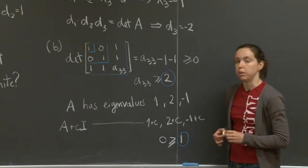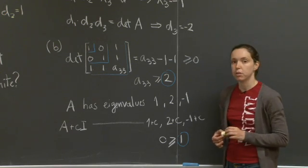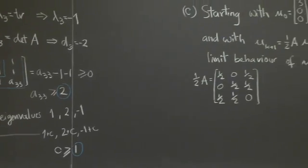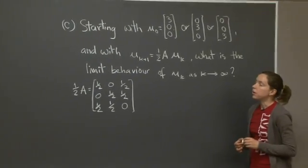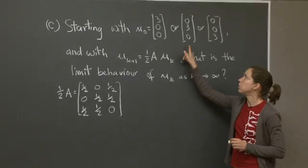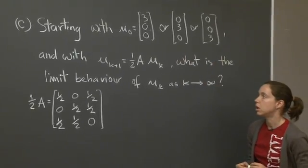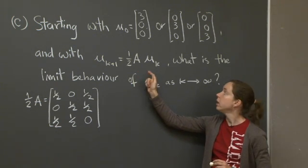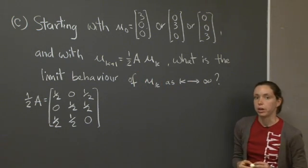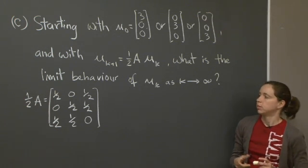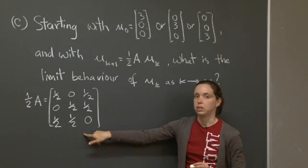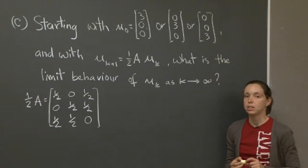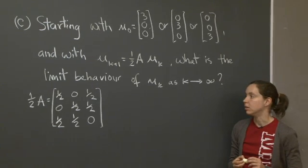That solves parts A and B of this question. There is a part C: starting with one of these three vectors — (3,0,0), (0,3,0), or (0,0,3) — and with u(k+1) equals one-half of A times u(k), what is the limit behavior of u(k) as k goes to infinity? I've written the matrix one-half of A here for your convenience. Hit pause and work on it, and when you're ready we'll get back and solve it together.